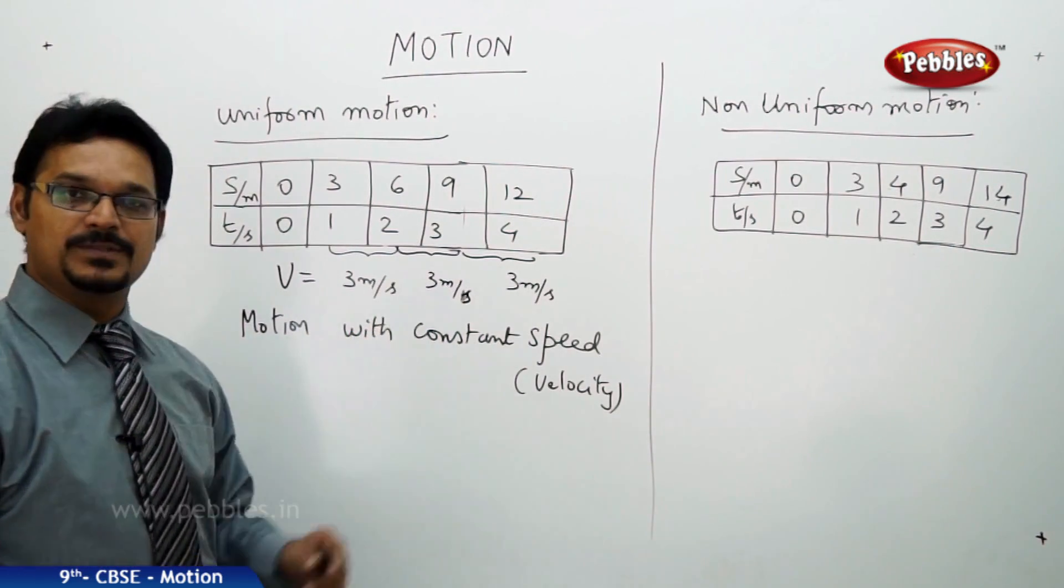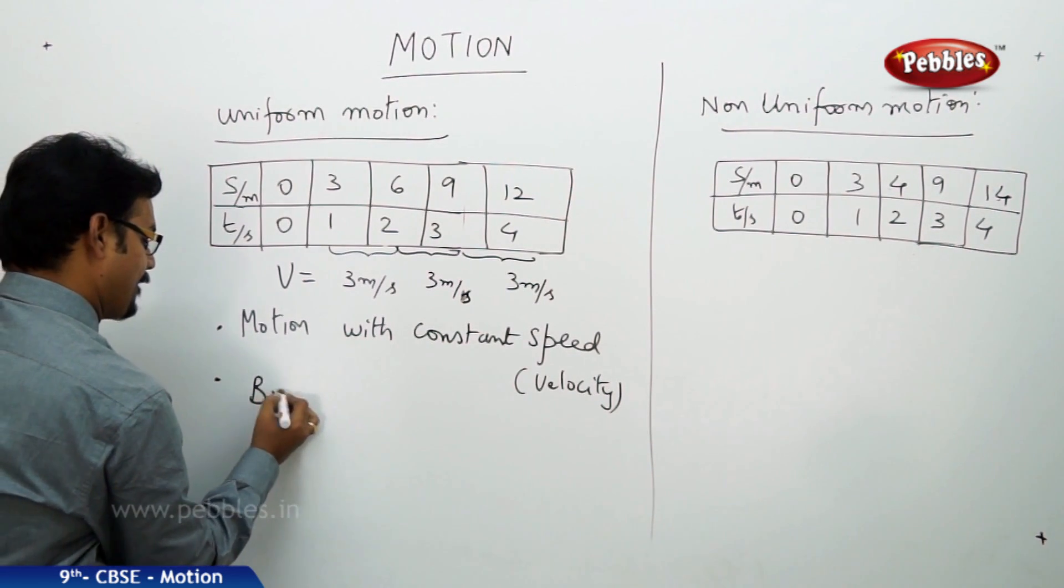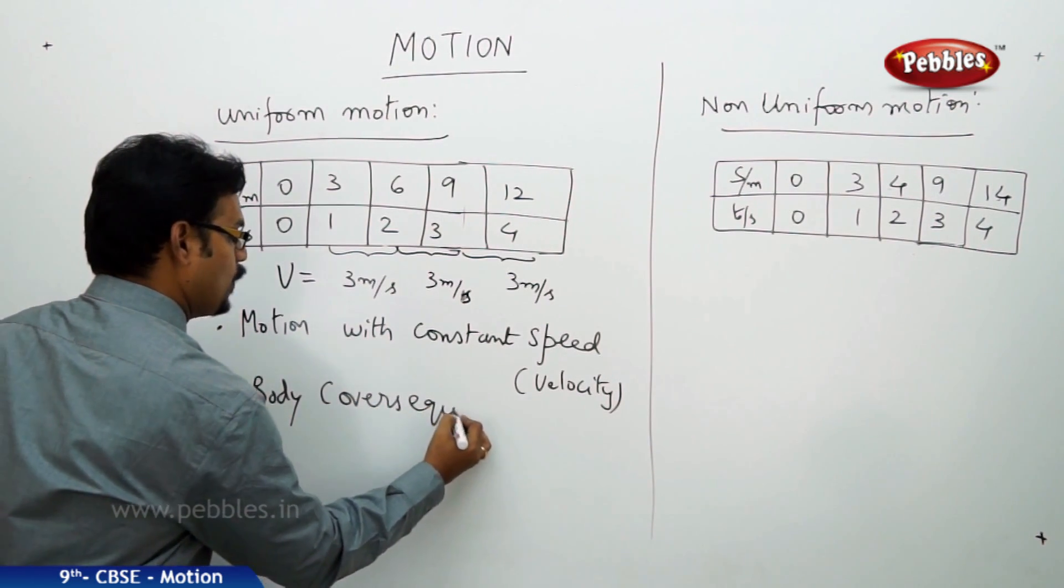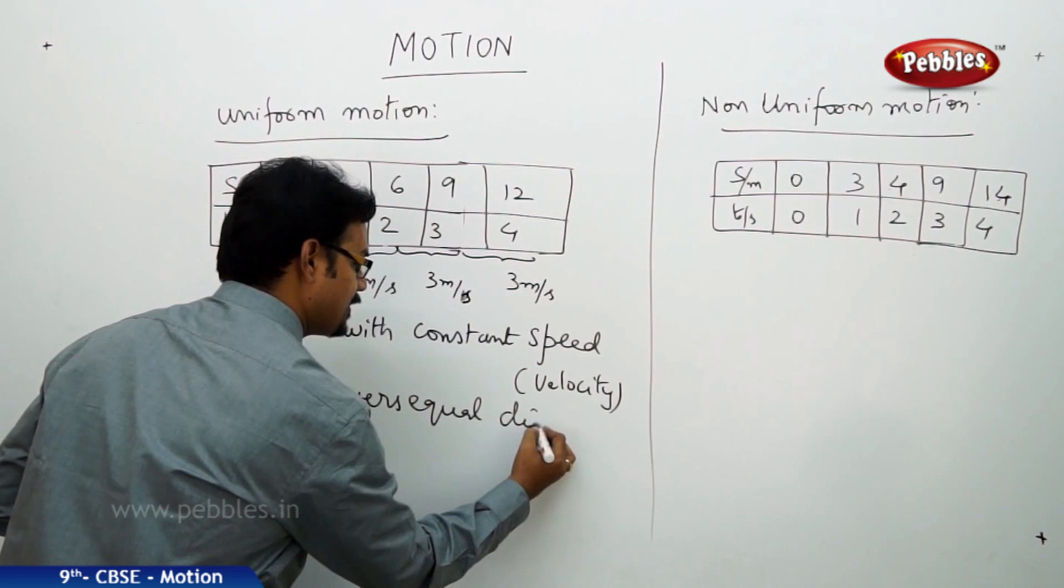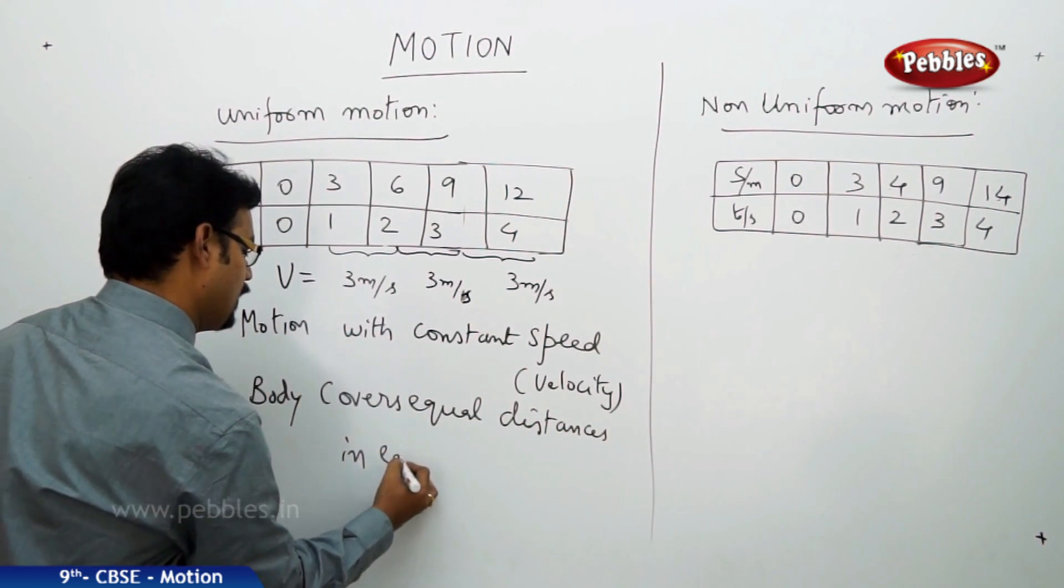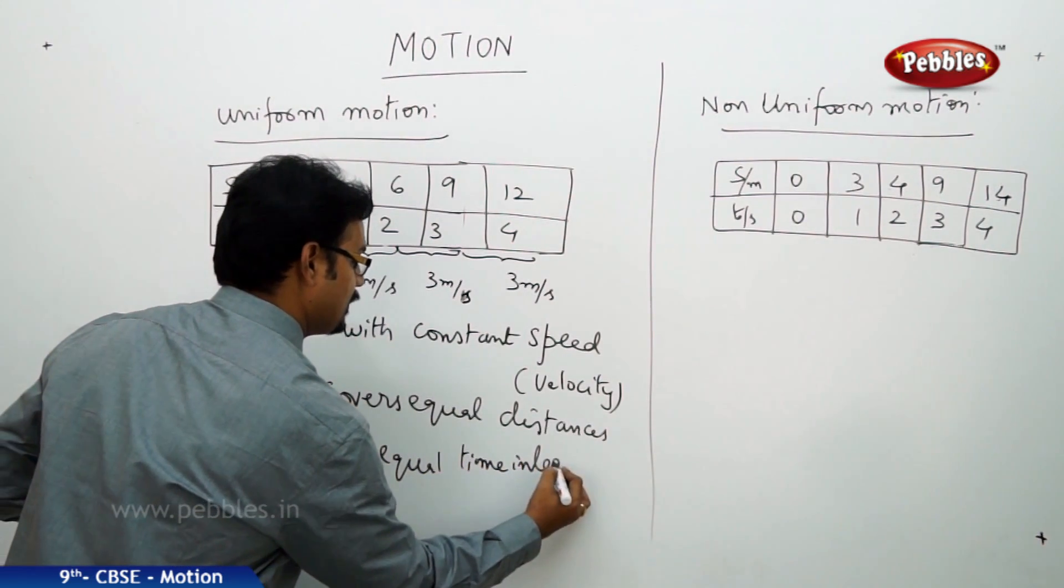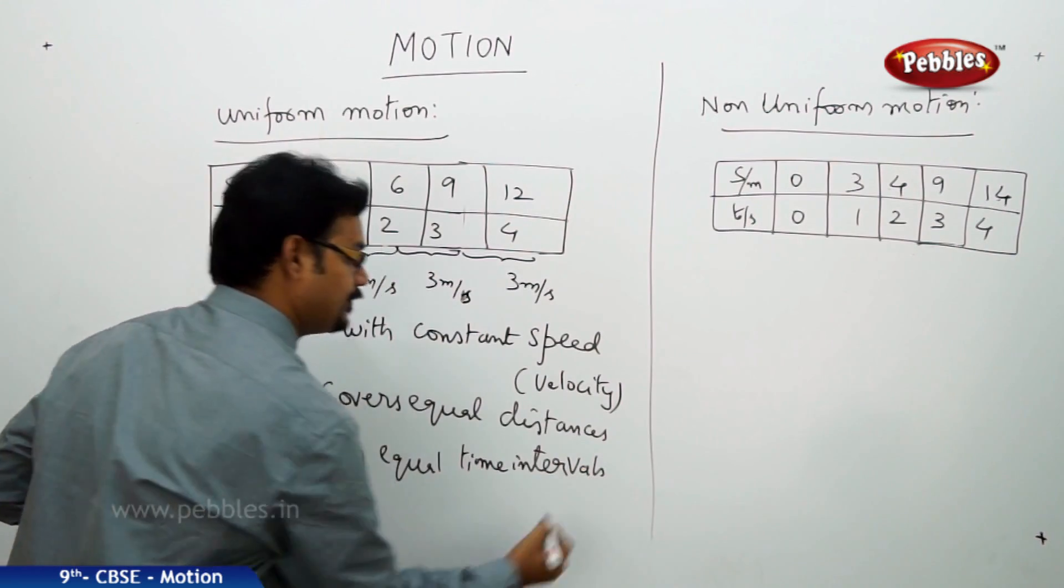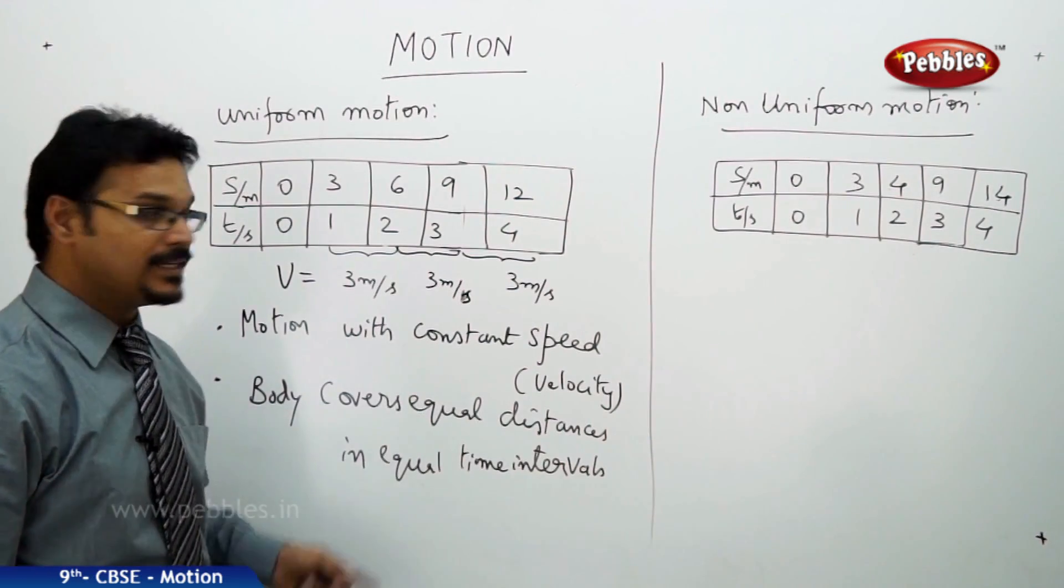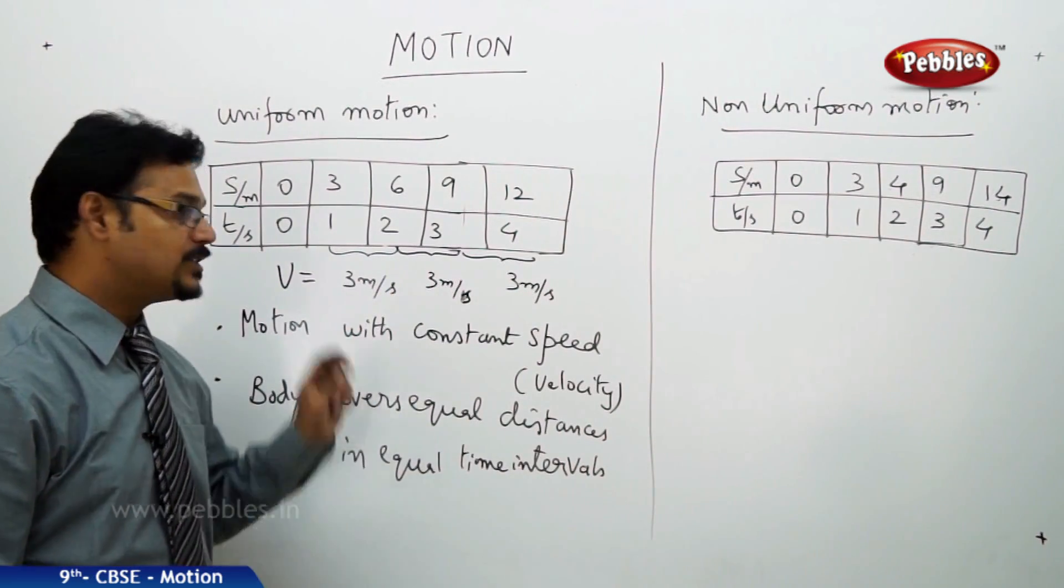Motion with a constant speed. Or, you can say body covers equal distances in equal time intervals. Equal distances in equal time intervals. Or, the motion with a constant speed. And, in this example, the constant speed is 3 meters per second. That is, uniform motion.